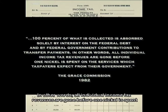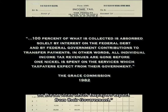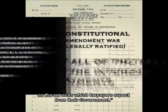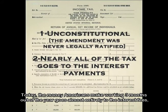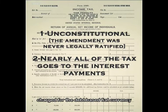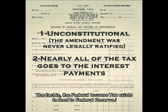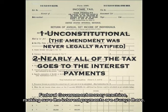In other words, all individual income tax revenues are gone before one nickel is spent on the services which taxpayers expect from their government. Today, the money Americans make working three months out of the year goes almost entirely to the interest fees charged for the debt-based fiat currency. The fact is, the federal income tax exists to feed the Federal Reserve money machine, making sure the interest payments are always there.